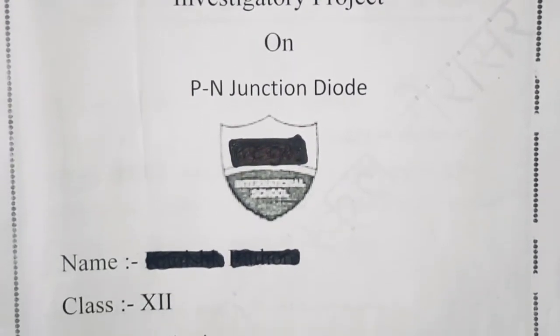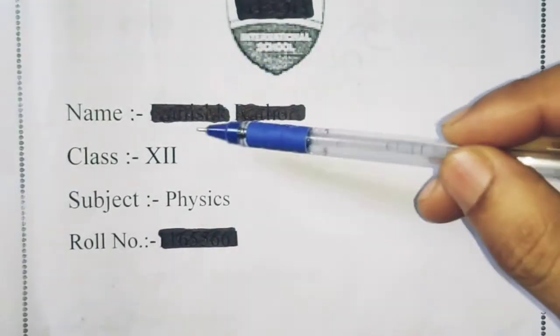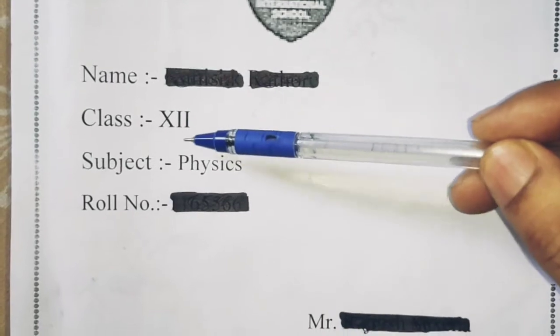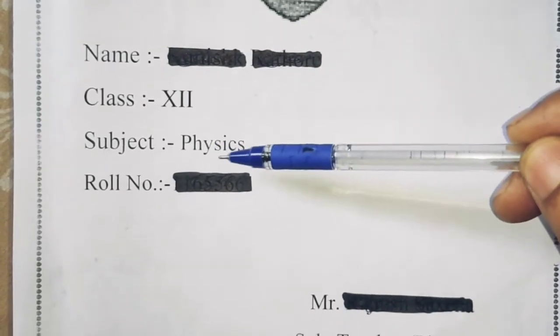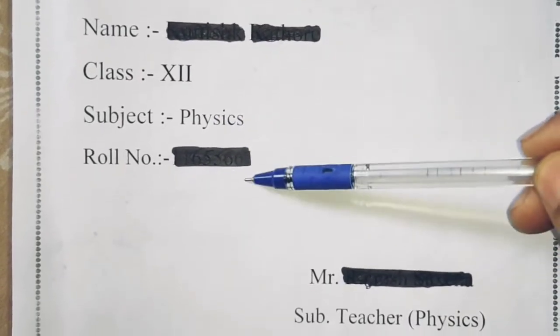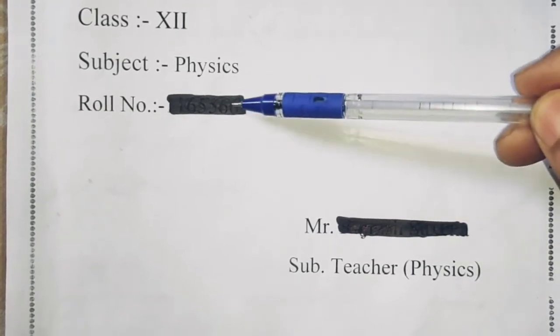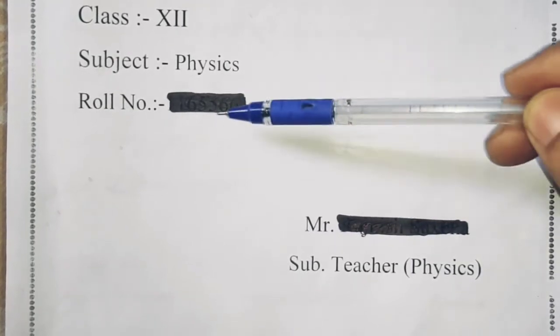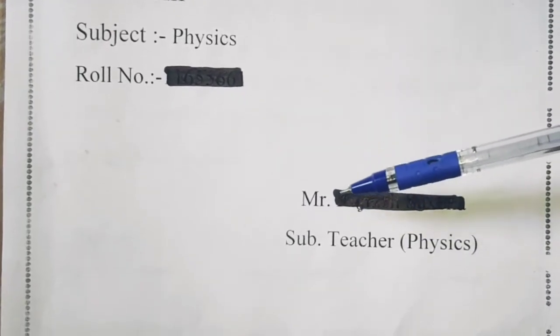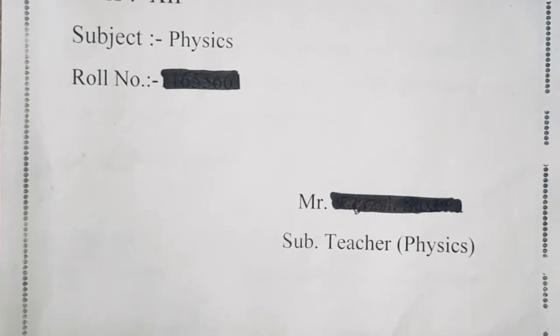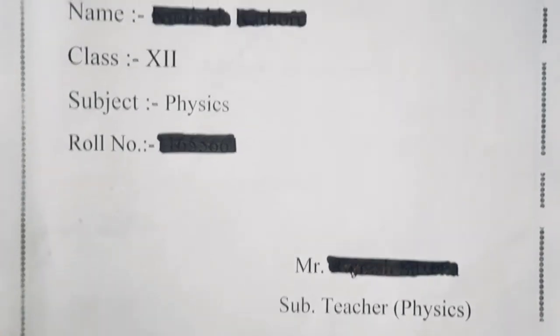Here the name of the student will be mentioned, 12th standard, this is the subject, roll number — the final roll number will be put here. This is the name of the teacher, the subject teacher who deals with physics for the session.